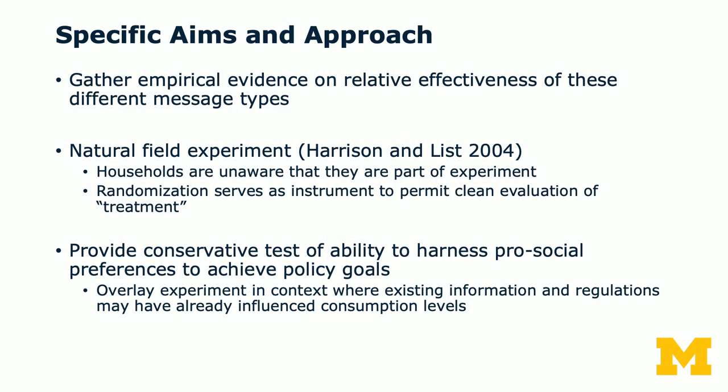Social psychology studies often rely on self-reported measures of behavioral change, which tend to be not as accurate as actual behavioral or objective measures. So what the authors have done is use a natural field experiment. Remember in 631, experiment design and analysis, we went through a paper by Harrison and List, who gave us different categorizations of experiments, from lab experiments to field experiments. Natural field experiments are characterized by the fact that households or participants are unaware that they're part of an experiment.